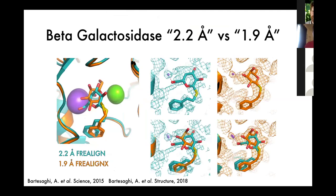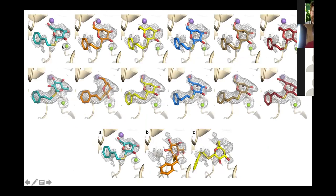Coming back to the beta-galactosidase example, we wanted to see how the pipeline would perform. In teal are the deposited models for 5A1A and 6CVM with their associated maps. The GEMspot pipeline consistently produces poses that look a lot like the original 5A1A pose, with the sugar ring oriented with the oxygen facing the same way. As an additional comparison, you can see what happens if you perform docking without the experimental map as a restraint — you get poses that don't agree with the density very well.